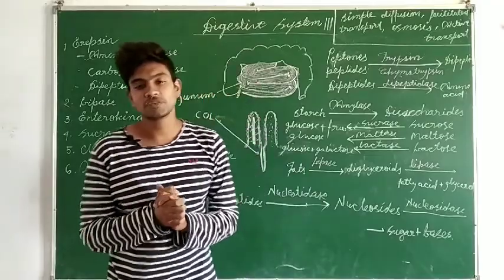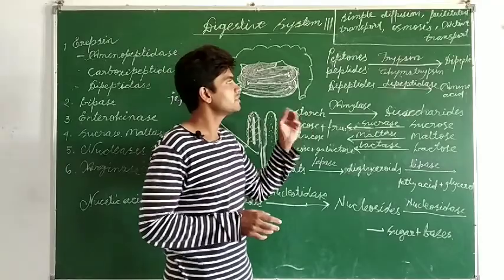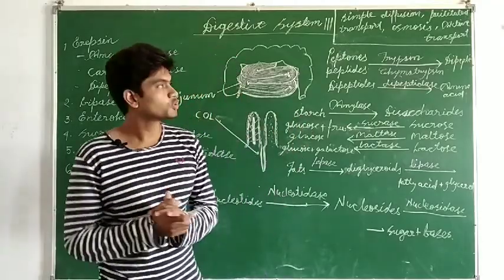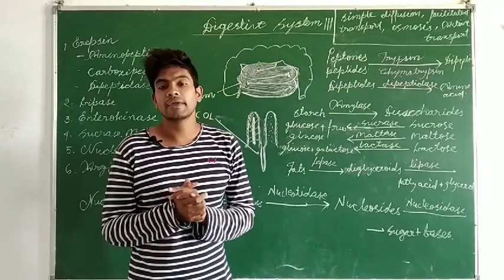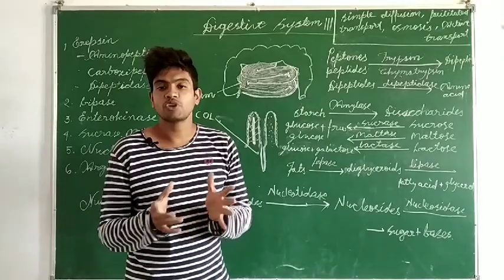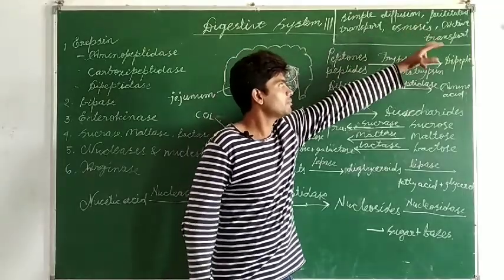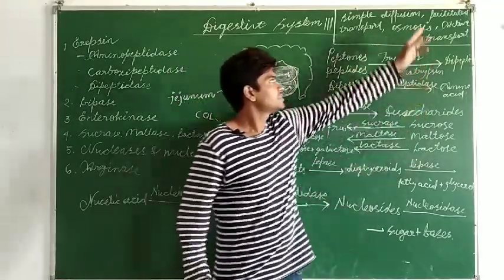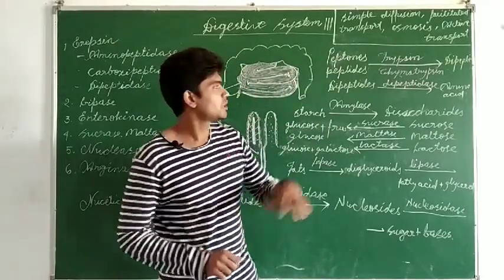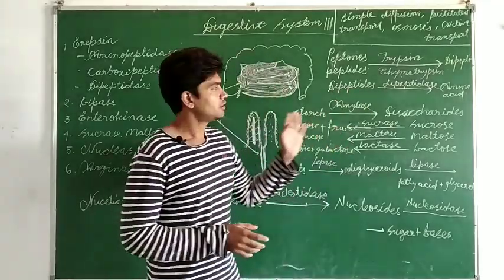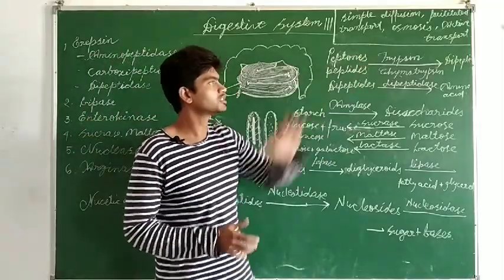The second method is facilitated transport. As the name suggests, it requires someone's help — here glucose and amino acids are absorbed by carrier proteins, which force them inside the intestine. Some glucose and some nucleic acids are also absorbed through this means.